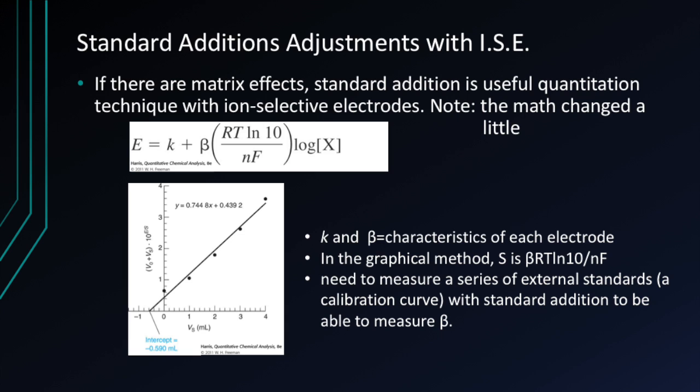TISAB, discussed earlier, is used to keep the activity from having large changes. Even so, there is a possibility that your matrix can change your activity. In order to account for this, you can use a standard addition to quantify the changes. The standard addition equation used here is slightly different from the standard form. To properly measure, you will need to make a series of external standards or a calibration curve with the standard addition.